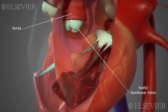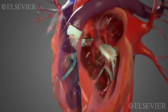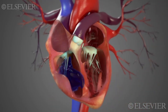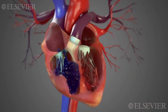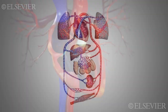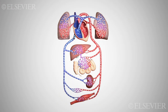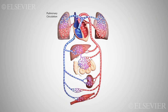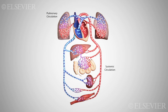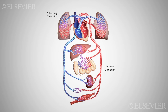Both the right and left sides of the heart contract at the same time, so the heart is really a combination of two pumps. The blood flow to and from the lungs is called pulmonary circulation. The blood flow to and from the rest of the body is called systemic circulation.